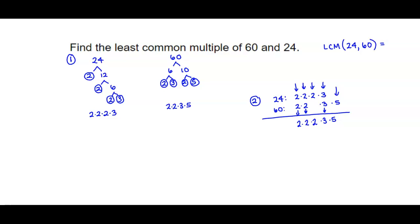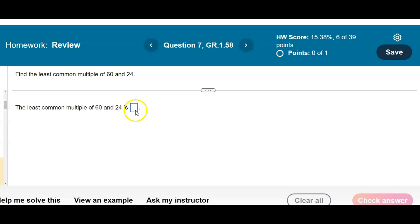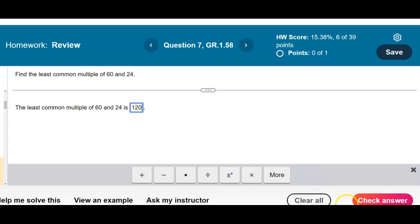If we take 2 times 2 times 2 times 3 times 5, that's going to give us the value of 120. And so therefore, that would be the least common multiple. So the answer is 120.